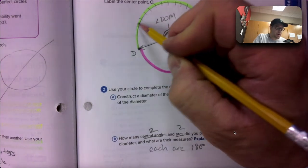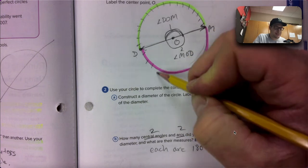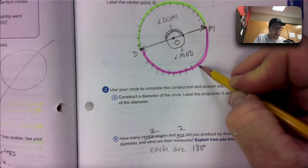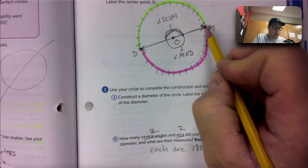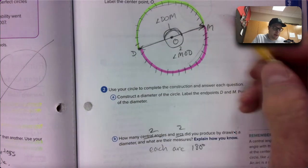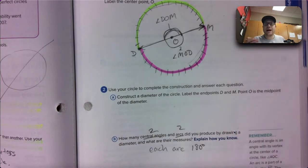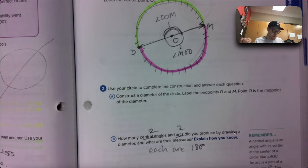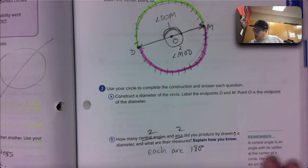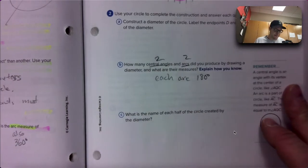180 slices down there. Add them together, you get 360 all the way around a circle. All right, what is the name of each half of the circle created by the diameter? So if you put that half together and that half, this is the green half and the pink half, you get a full circle. This is a semicircle. Two semicircles